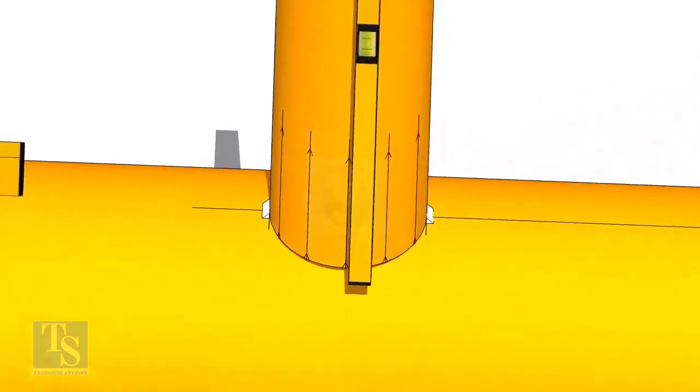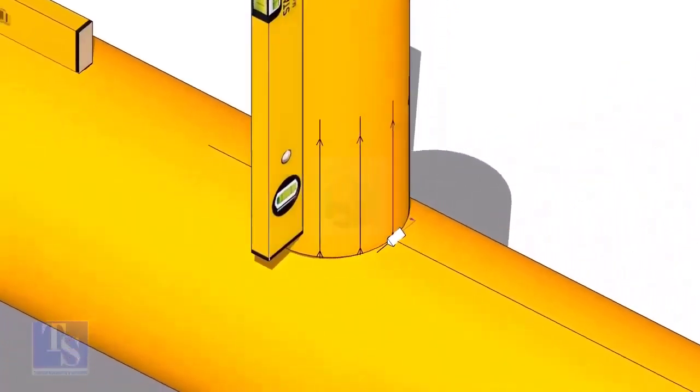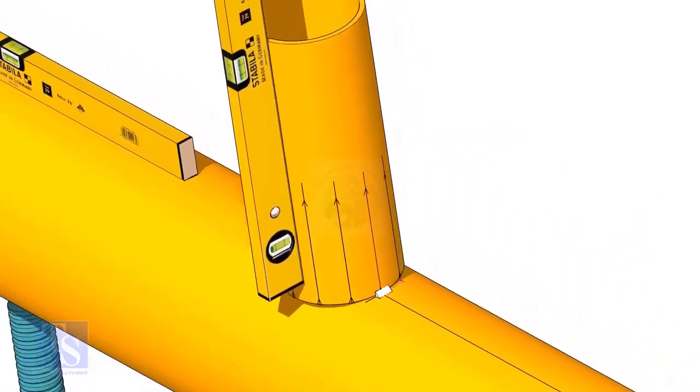Now make sure the pipe header and the branch are horizontally and vertically level. If required, strengthen the tack weld.